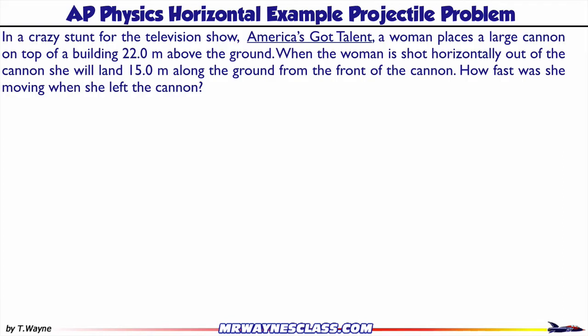In a crazy stunt for the television show America's Got Talent, a woman places a large cannon on top of a building 22 meters above the ground. When the woman is shot horizontally out of the cannon, she will land 15 meters along the ground from the front of the cannon. How fast was she moving when she left the cannon?